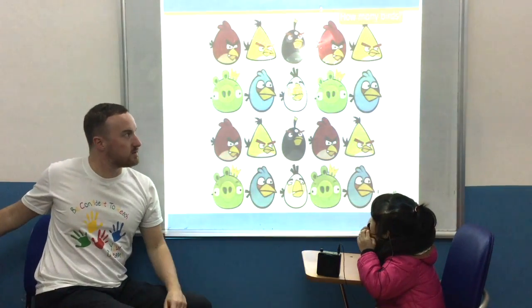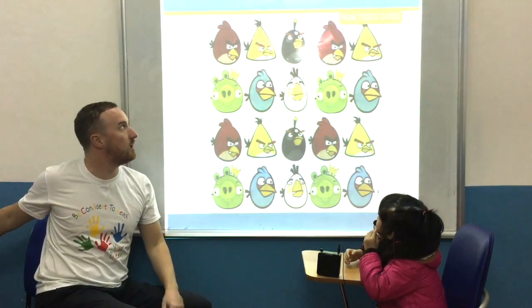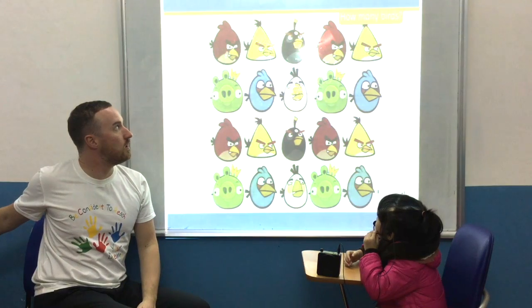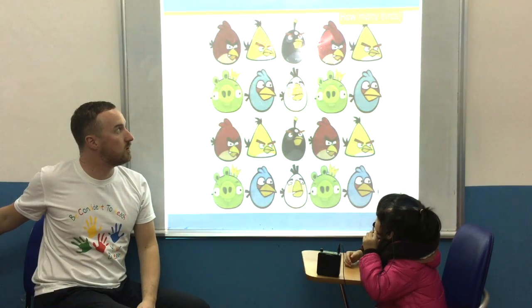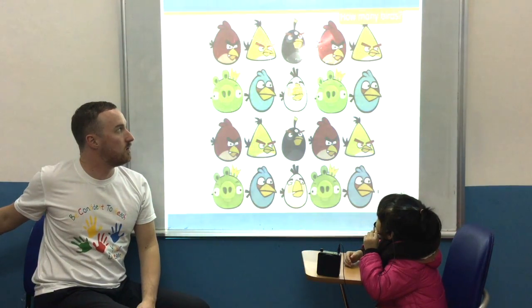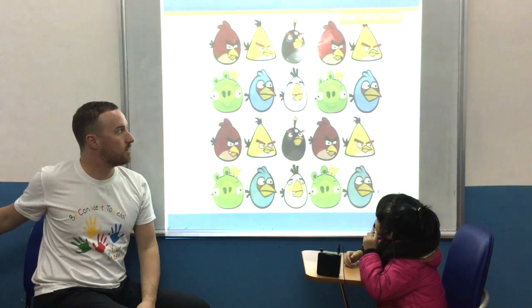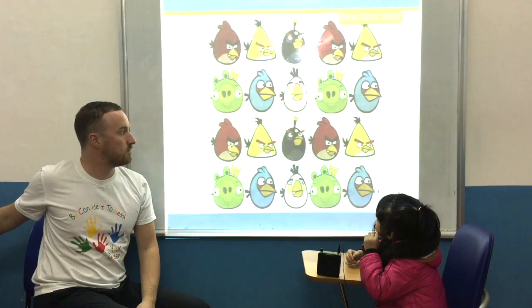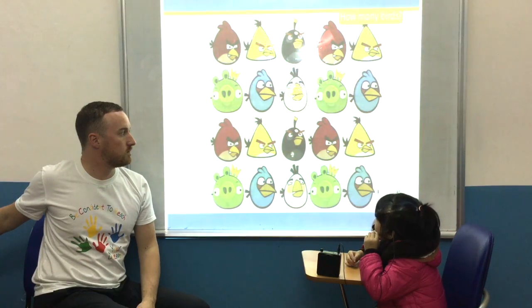So how many birds are there? 1, 2, 3, 4, 5, 6, 7, 8, 9, 10.